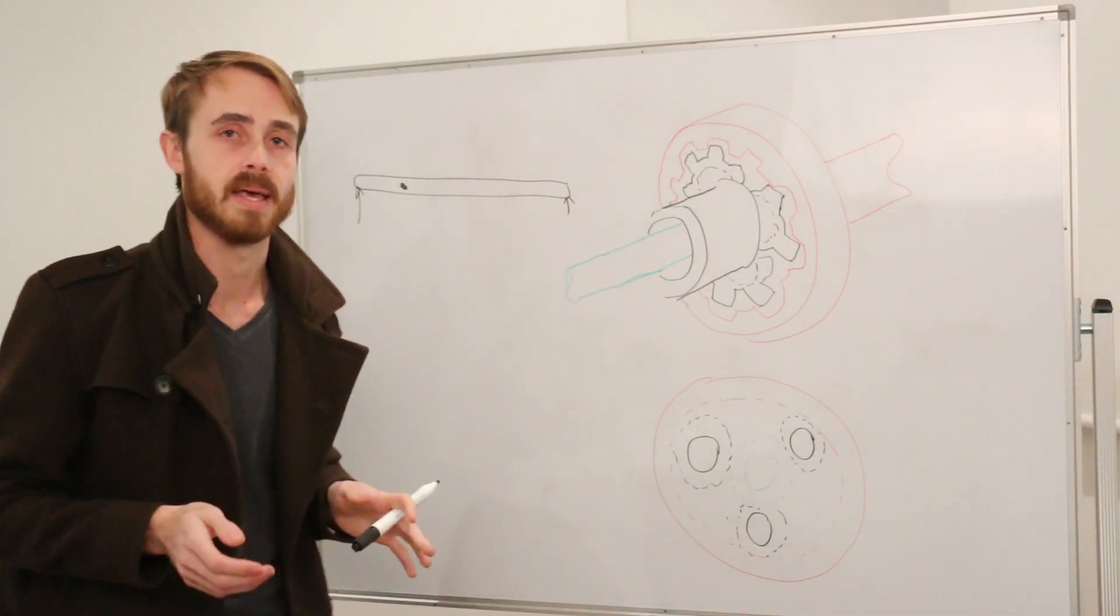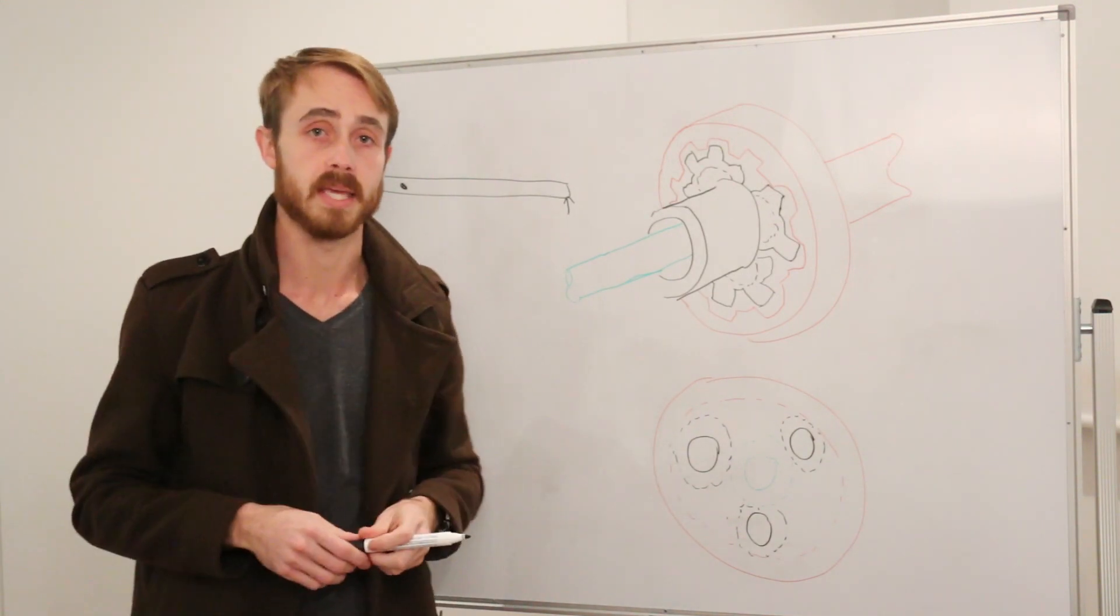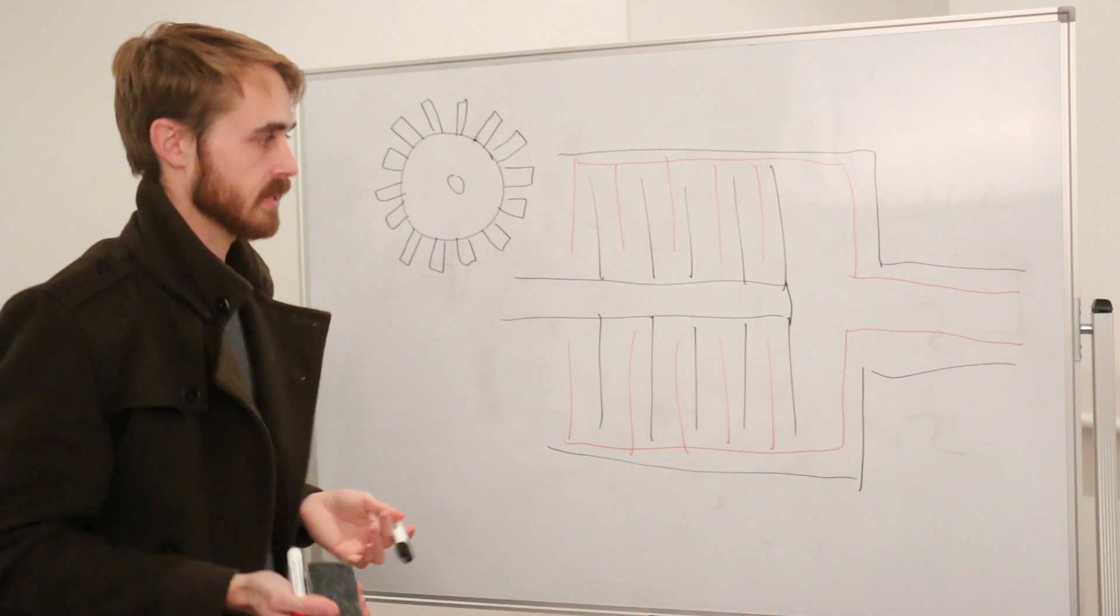Of course, with the planetary gear set explained, it now brings the question of where does this Ferguson viscous coupling come in. What a Ferguson viscous coupling is, is a pretty basic device.